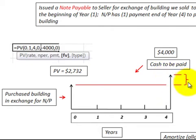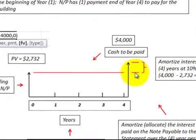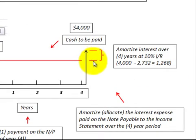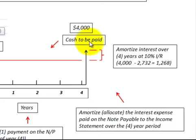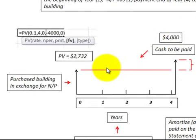What we have to calculate here is how much interest expense is included on that notes payable over that four-year span. Once we determine that, we can amortize and allocate that interest expense to the income statement over the four-year period. We know what we're going to pay at the end of four years, so we take that payment and discount it back to the present value at the beginning of the first year.